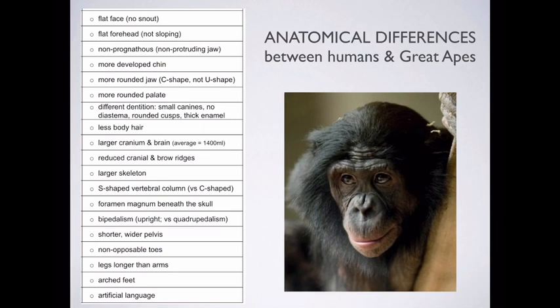When you look inside the mouth at the shape of the jaw and the palate — the bottom part of your mouth that forms the base where your tongue sits — that is a very rounded shape. We refer to it as having a C-shape, whereas when you look at the other apes, the shape of their jaw is more U-shaped. Likewise, the top part of our mouths — the hard and soft palate — those are also C-shaped rather than U-shaped.